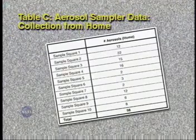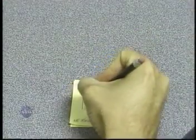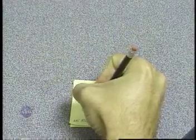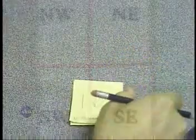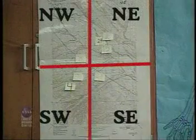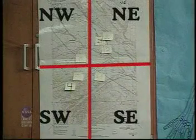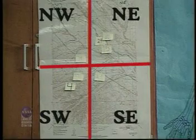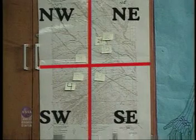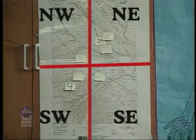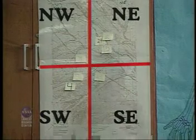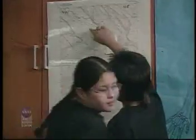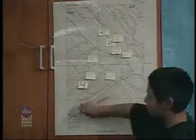Next, you'll write your address and the total number of aerosols from Table C on a self-adhesive note. Your teacher will divide a map of your community into four regions — Northeast, Northwest, Southeast, and Southwest. All students will place their labeled adhesive notes onto the map where they live.